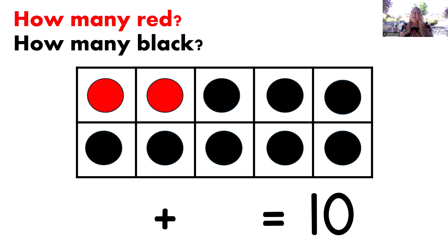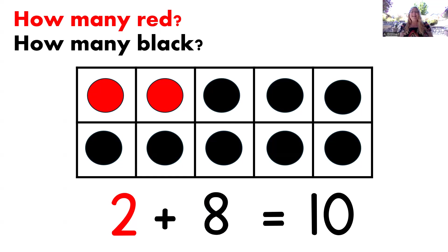How many dots are red now? That's right, two. And how many dots are black? Eight. Now let's read that equation: two plus eight equals 10. Wonderful.